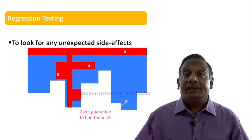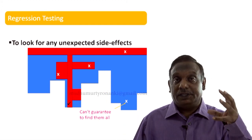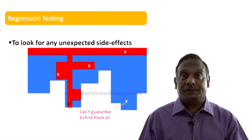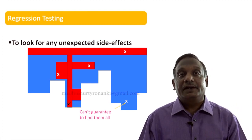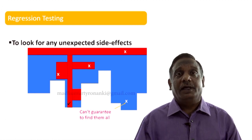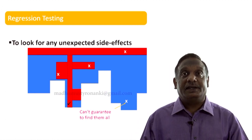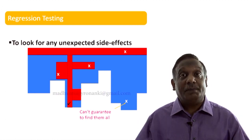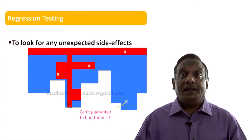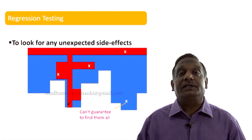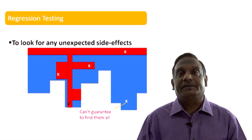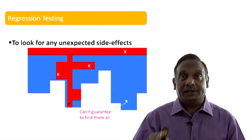I hope you have understood the change related testing types — retesting and regression testing. We will talk more about retesting and regression testing in the next lesson on maintenance testing. If you have any questions, please post in the discussion forums and I will address them. Learn and have fun.